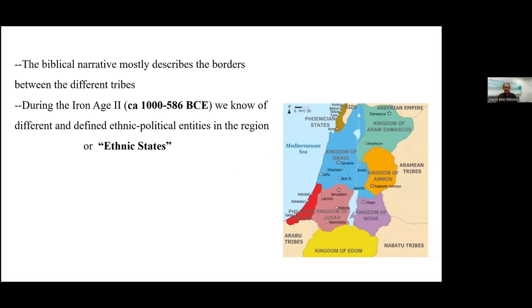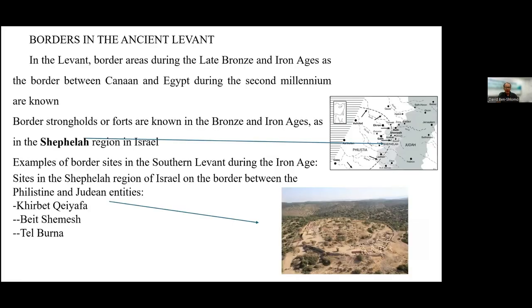The biblical narrative describes borders quite often in some texts, usually between tribes of Israel. We also know there are various political or possibly ethno-political entities in this region in the southern Levant, mostly in Iron Age 2, the first half of the first millennium BC. We know this both from the biblical narrative, from external narratives like Neo-Assyrian texts, and from the archaeological record. We have several kingdoms and polities: the Kingdom of Israel, Judah, Ammon, Moab, the Philistine region, the Phoenician region, and maybe other entities as well.